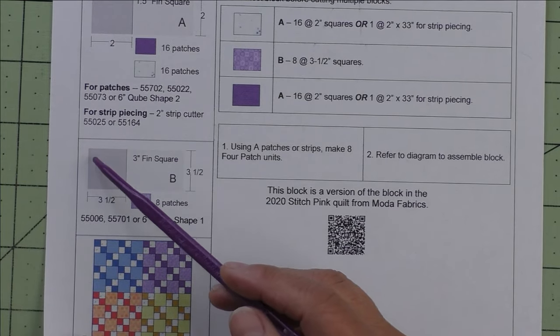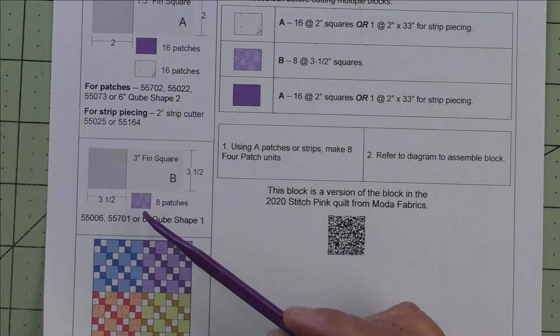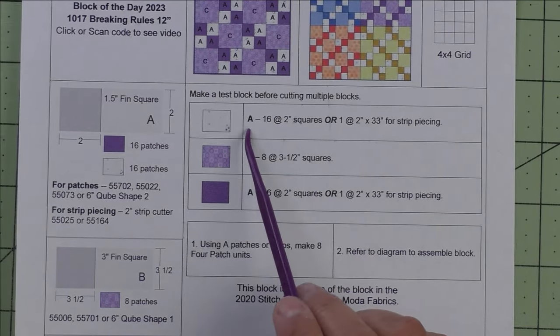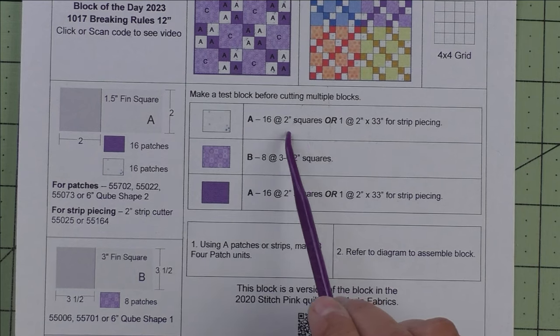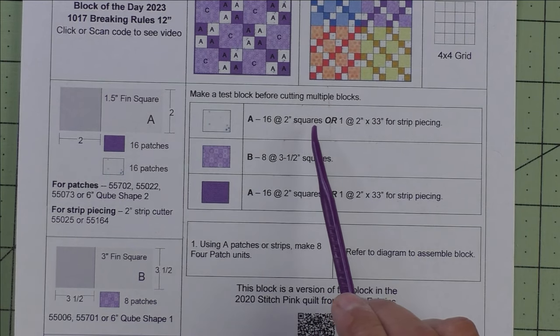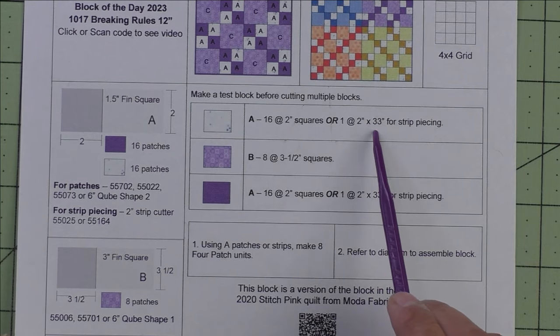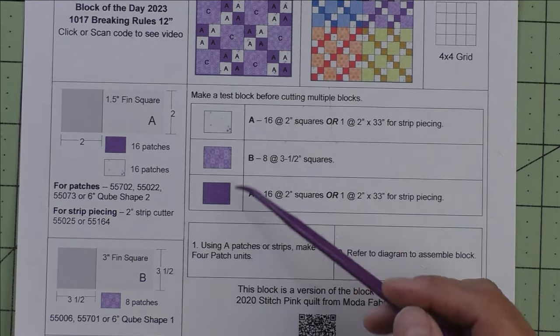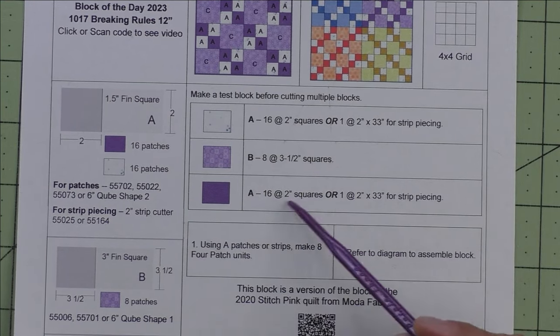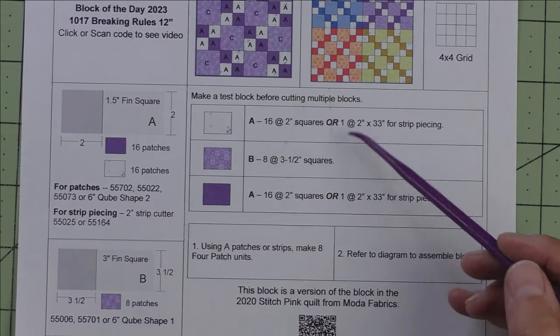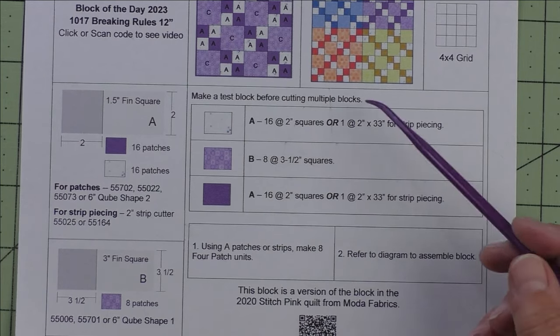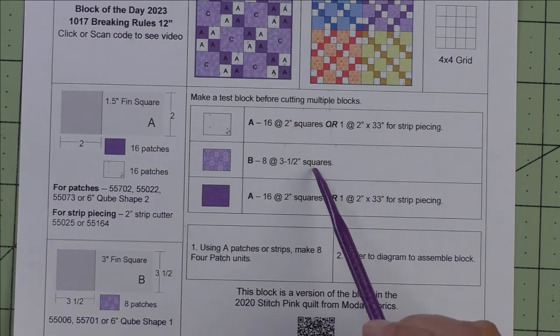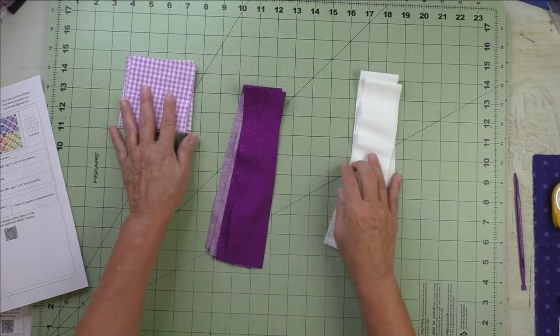Patch B is a three inch finished square. You cut three and a half inch squares and you need eight patches of the medium fabric. Here are the cutting instructions. We'll cut 16 two-inch squares or you'll cut one two inch by 33 inches for strip piecing. You'll do the background and the dark fabric for the strip piecing. If you cut squares, cut squares for both of them, and if you do strip piecing, do a strip for each of them. And then eight three and a half inch squares.